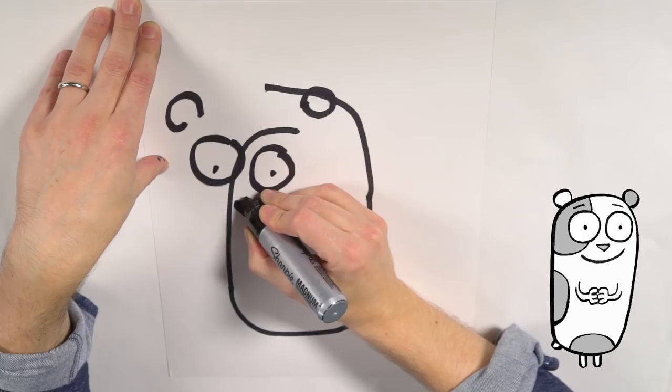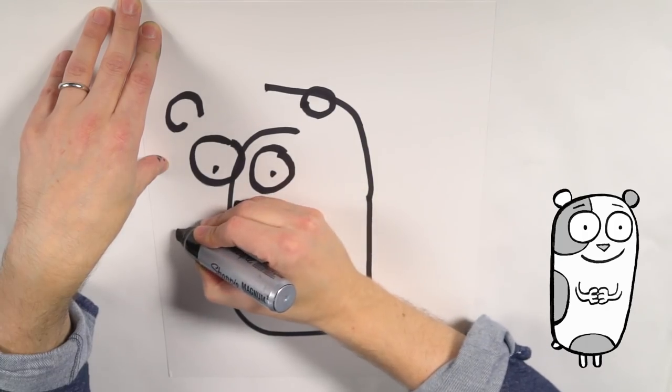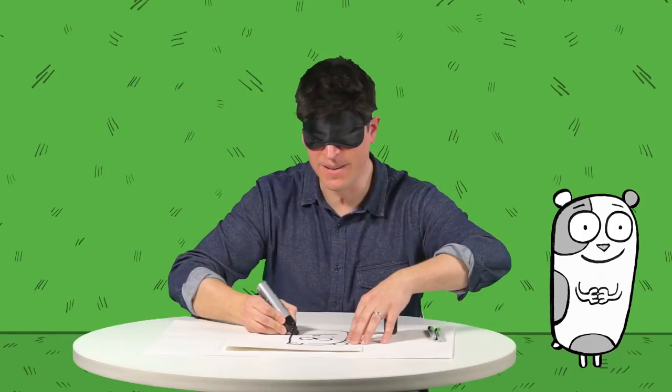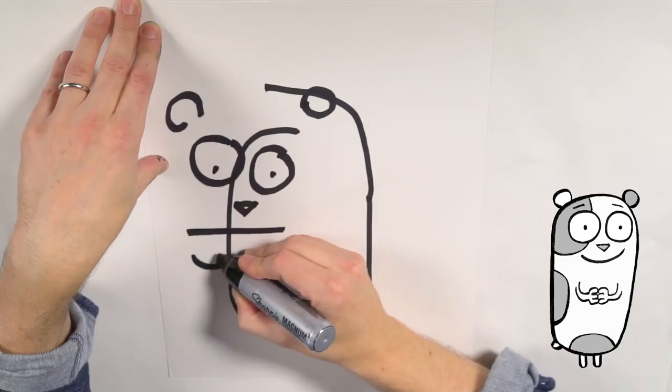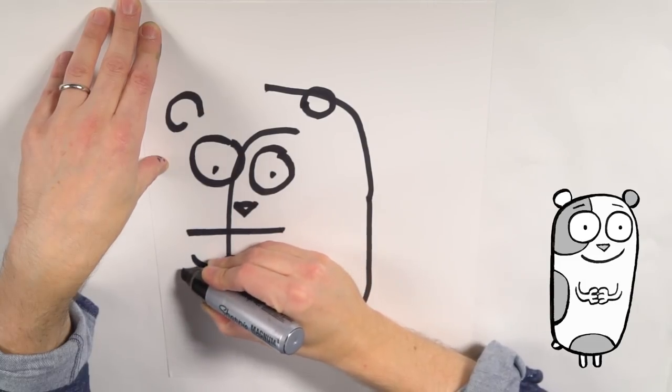He has another circle right next to it because he has two eyes, and he's got a little nose and he's got a line for his mouth. He's got little hands.